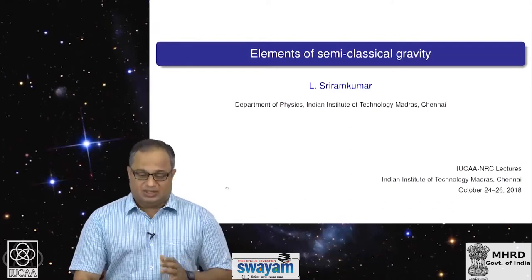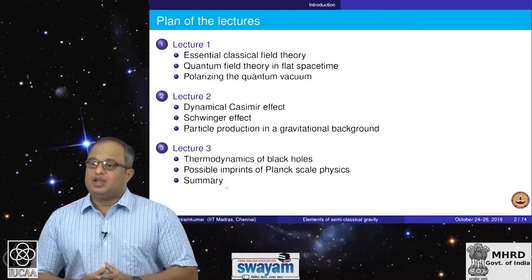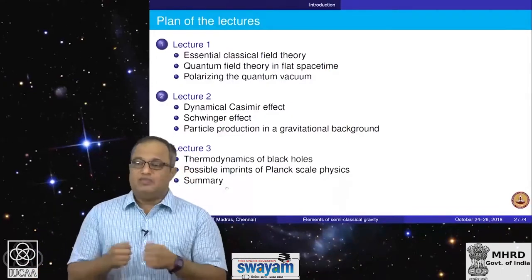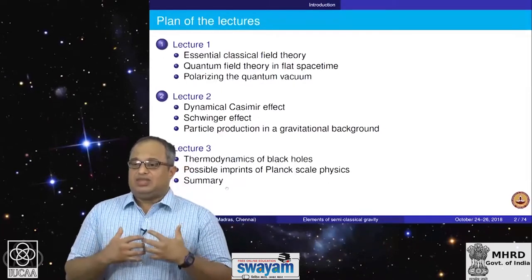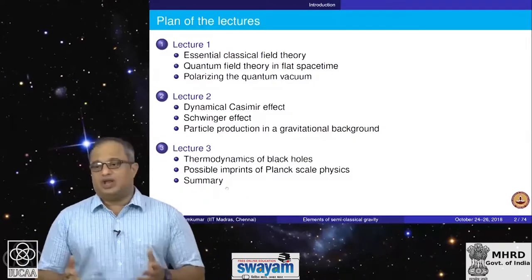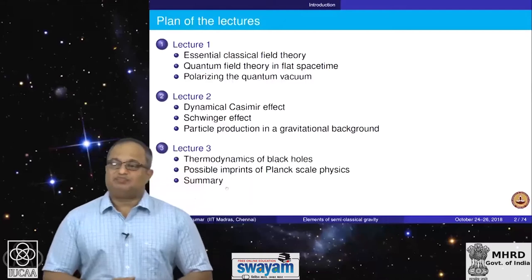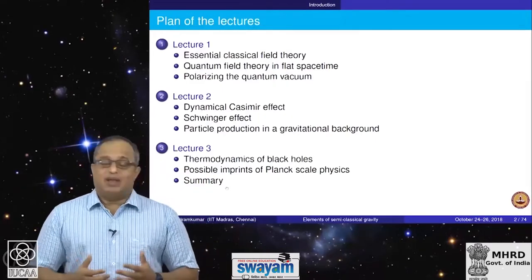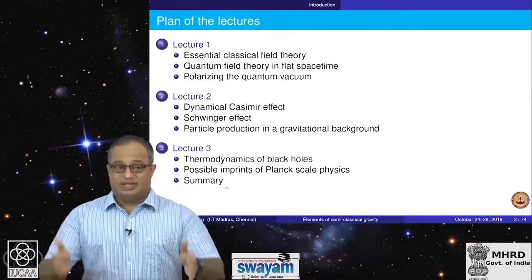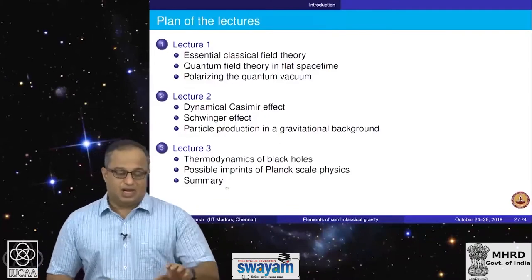This set of lectures will consist of three lectures. In lecture one, I will talk about some essential classical field theory: normal modes, how you normalize these modes, and what completeness of these modes means. These will be used when I talk about quantum field theory and quantization of a field in a given background. I will first talk about quantization in flat spacetime or Minkowski spacetime, and discuss polarizing the quantum vacuum, the Casimir effect, and the Unruh effect. That will be the content of the first lecture.